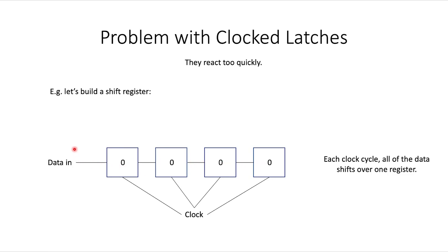You can think of data as flowing from one side to the other. Every clock cycle I want all the data to shift over. So if there's a one here, this one should move over and be replaced by whatever's in the input wire. Whatever's in the last box gets bumped off and erased and forgotten.